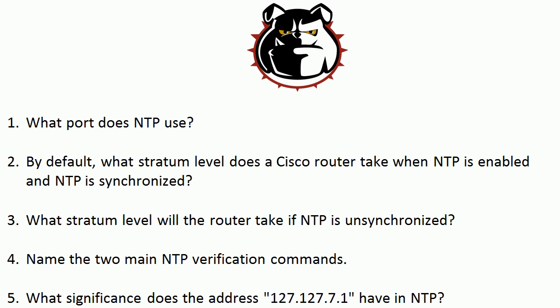Fourth, name the two main NTP verification commands — we'll see both of those on the live routers, plenty of good information there. And fifth, what significance does the address 127.127.7.1 have in NTP? And I know it's a loopback — that's not a good answer. We need to know exactly where that address comes into play in NTP.